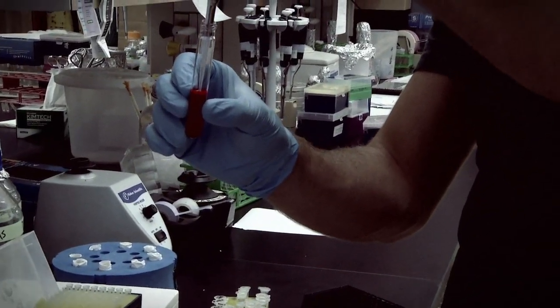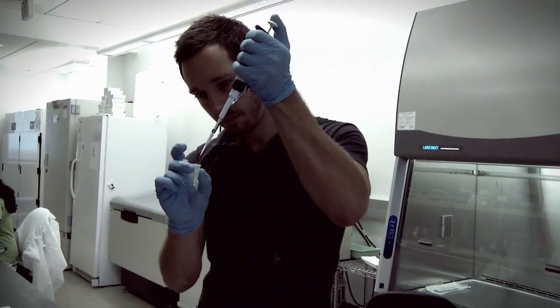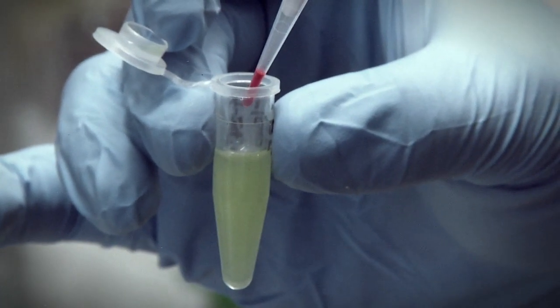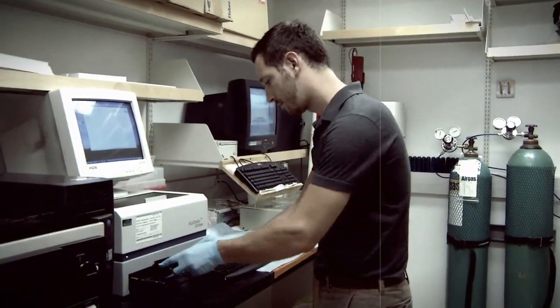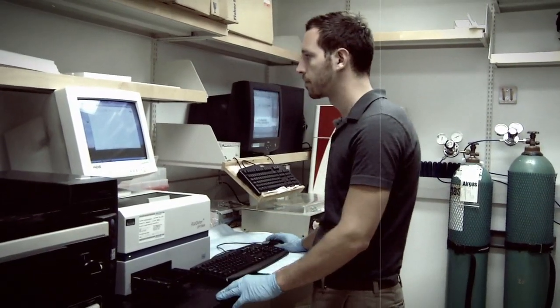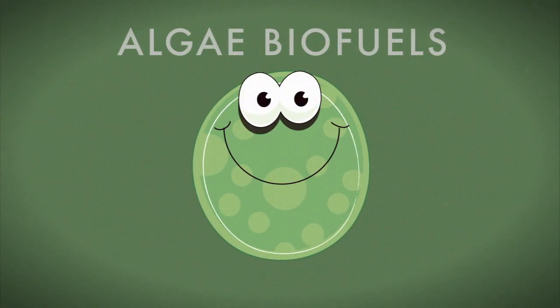The algae samples are given a special red dye called Nile red dye. This dye will stay in the oil droplets red. Therefore, the redder the sample gets, the more oil it has produced. You might think that measuring the amount of color in something could be done by looking at it, but actually an instrument called a spectrofluorometer is used. If your sample has made a lot of oil, then there's a chance it could be useful as the next great biofuel.